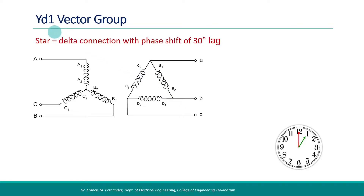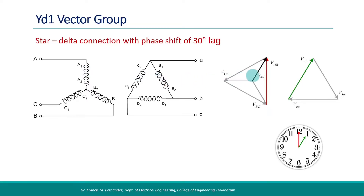Now we move to the YD1 vector group. The primary is star connected and the secondary is delta connected. The secondary line voltage VAB comes out from winding A, and primary side winding A is linked with it. Since the primary is star connected, we have to obtain the phase voltage as shown in the phasor diagram. The voltage induced in winding A of the secondary will be in phase with the voltage of winding A on the primary side, meaning secondary line voltage VAB is in phase with primary voltage VA. Considering the line voltage VAB on both sides, the secondary voltage is lagging by 30 degrees — the 1 o'clock position — and that is how this vector group is named YD1.